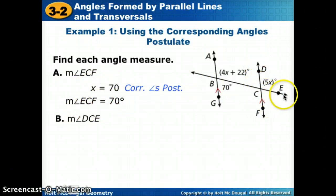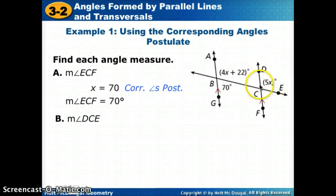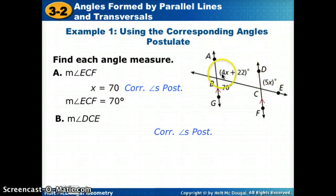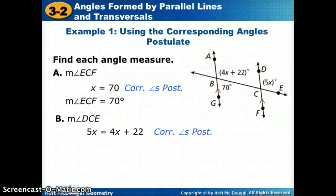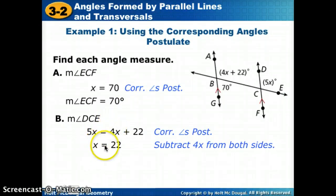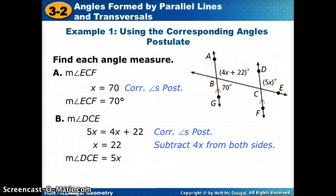Now we're going to look for angle DCE, which the picture tells me is 5X. We'll need to set up an equation. The angle related to DCE is 4X plus 22, and their relationship is corresponding. Since corresponding angles are congruent, I set those two measures equal: 5X = 4X + 22. Subtracting 4X from both sides gives X = 22. Since DCE is 5X, plugging in 22 gives us 110 degrees.